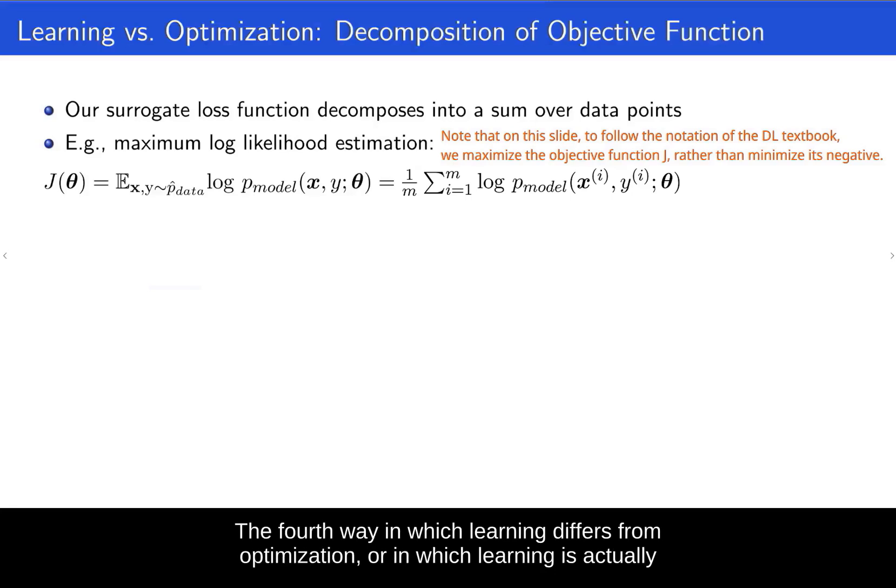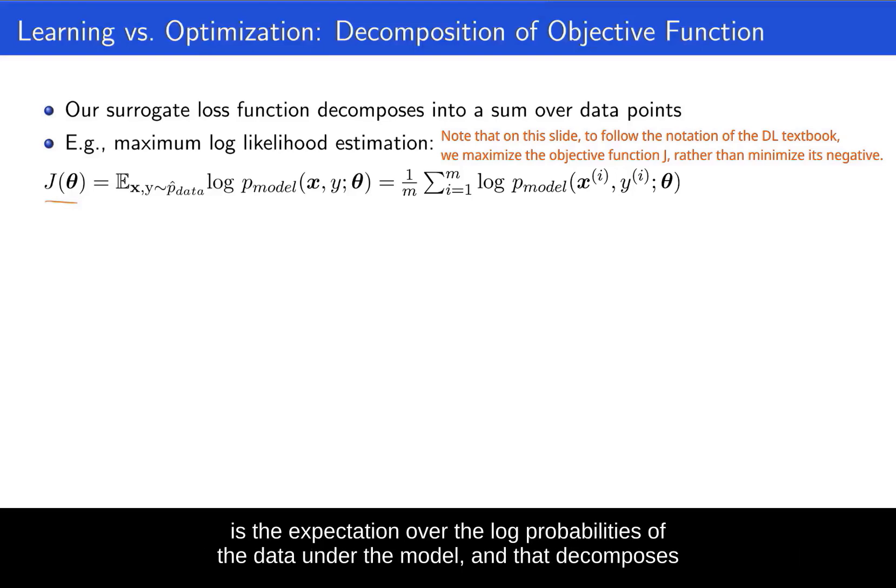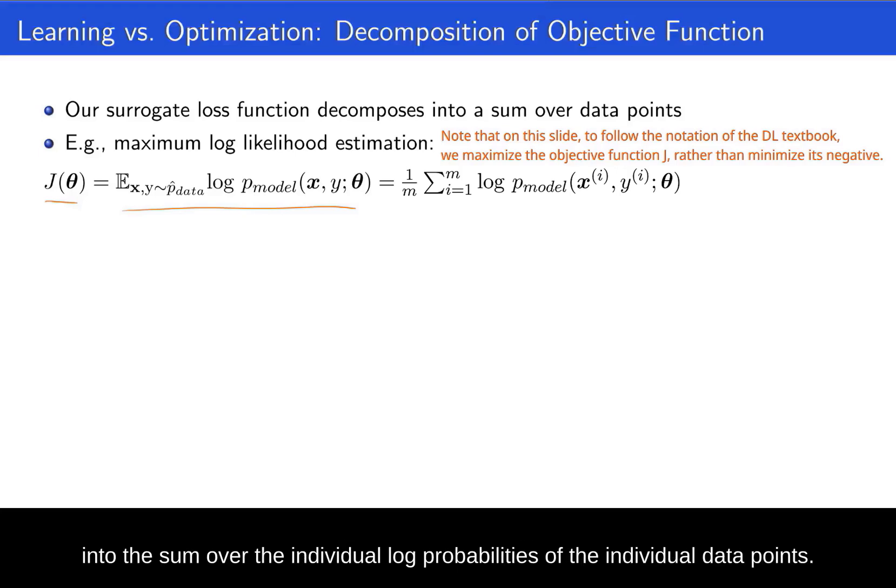The fourth way in which learning differs from optimization, or in which learning is actually a particular type of optimization problem, is that the surrogate loss function typically decomposes into a loss function over the data points. So we have a loss function, in this case here, maximum likelihood estimation, J(theta) is the expectation over the log probabilities of the data under the model. And that decomposes into the sum over the individual log probabilities of the individual data points.